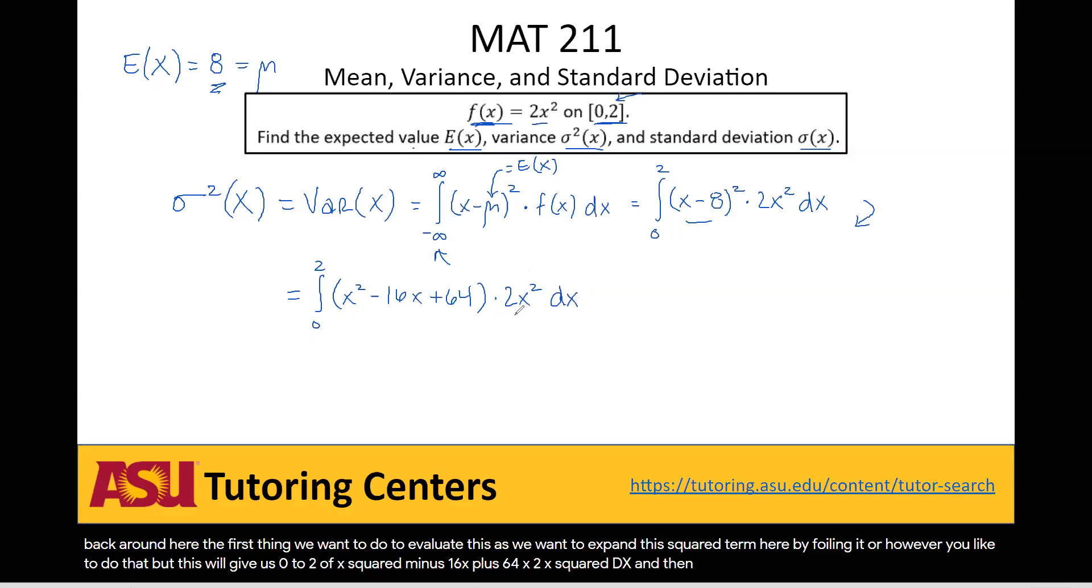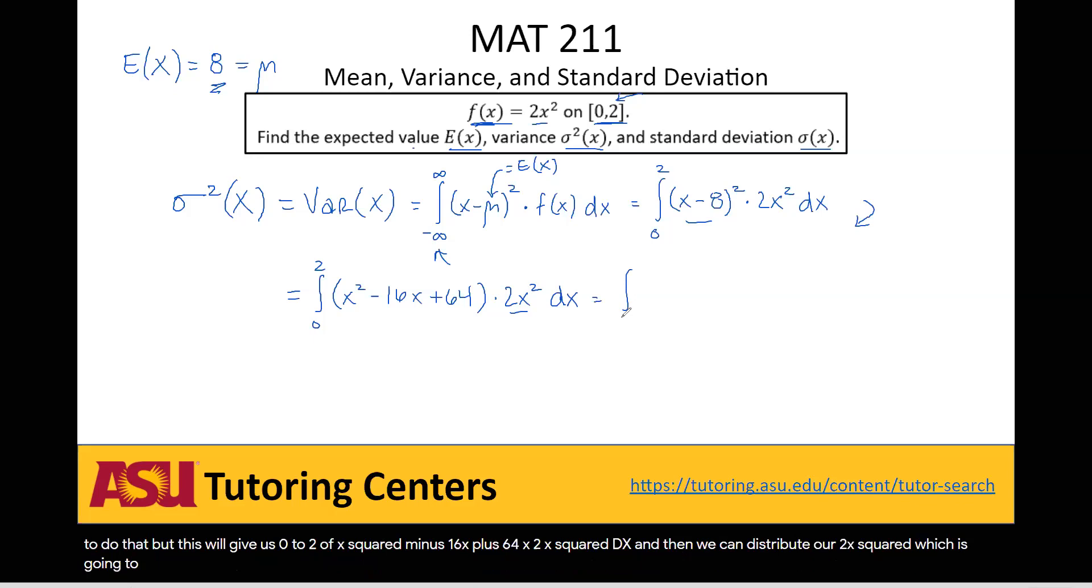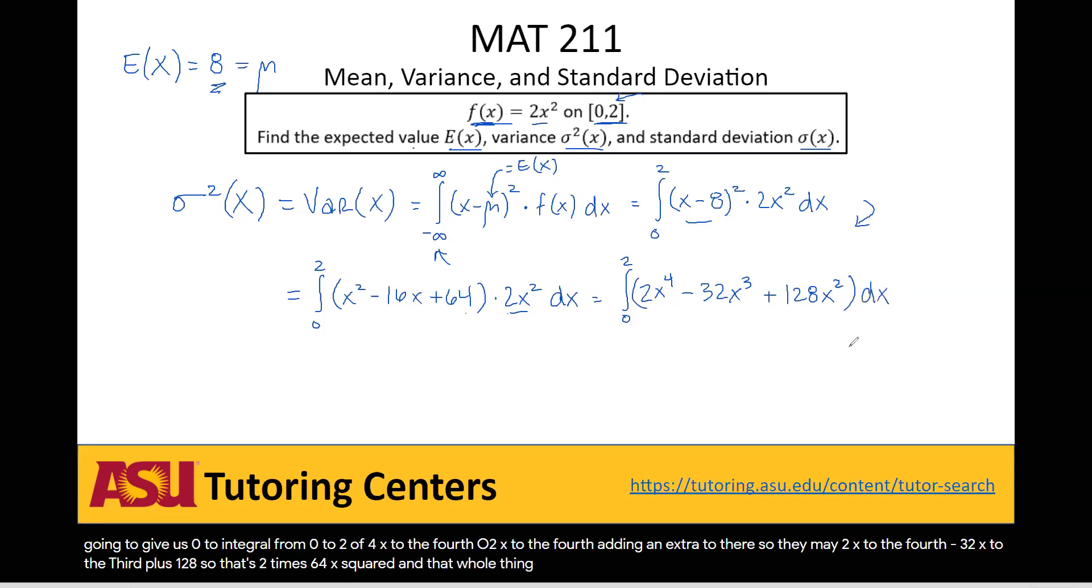And then we can distribute our 2x squared, which is going to give us integral from 0 to 2 of 2x to the 4th minus 32x to the 3rd plus 128, so that's 2 times 64, x squared. And that whole thing dx. So now we just need to integrate this.